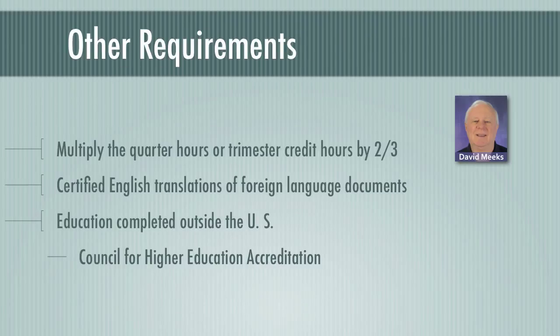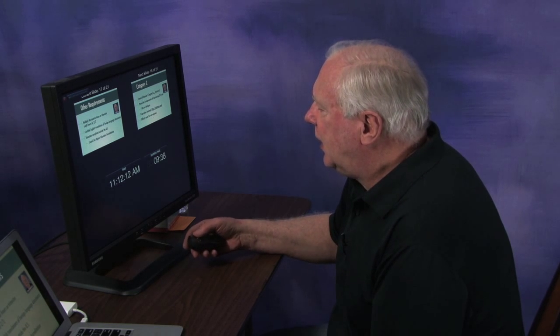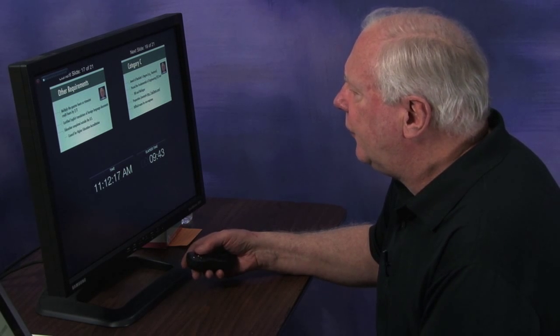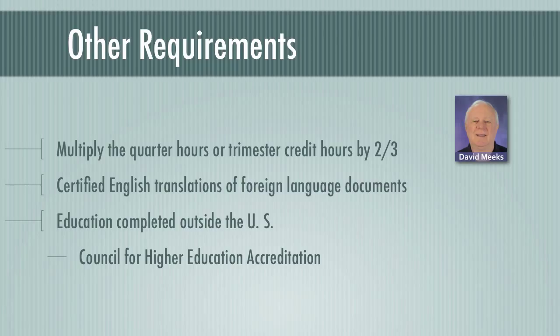If your courses were taken on a quarter-hour or trimester basis, multiply your college credits by two-thirds. If any documentation is in a foreign language, you must file certified English translations. If you have educational credits completed outside the US, the Office of Enrollment and Discipline may ask for documentation on equivalency with a similar U.S. program. One resource for that is the Council for Higher Education Accreditation.